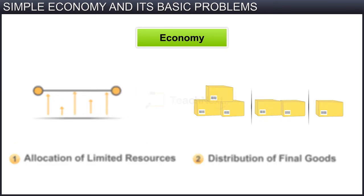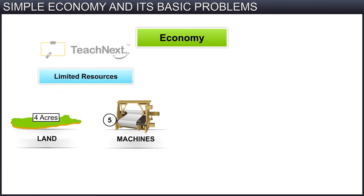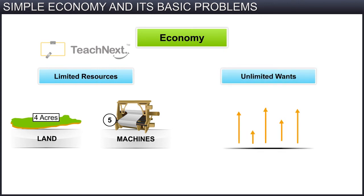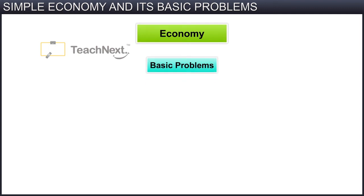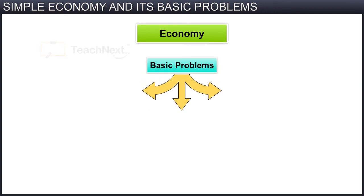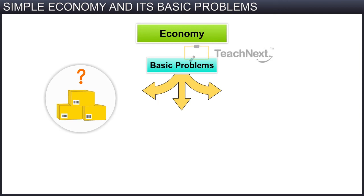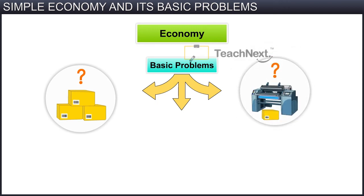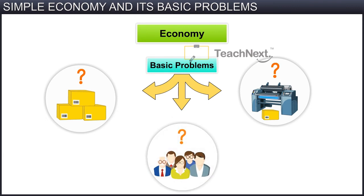Thus, due to the limited resources and unlimited wants, another economic problem of choice arises. The basic problems of an economy are therefore related to: what to produce and in what quantities, how to produce these goods, and for whom to produce these goods.